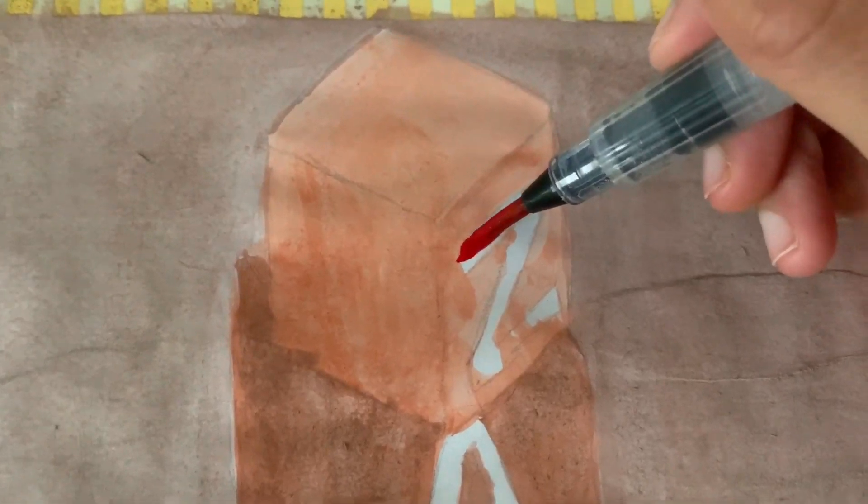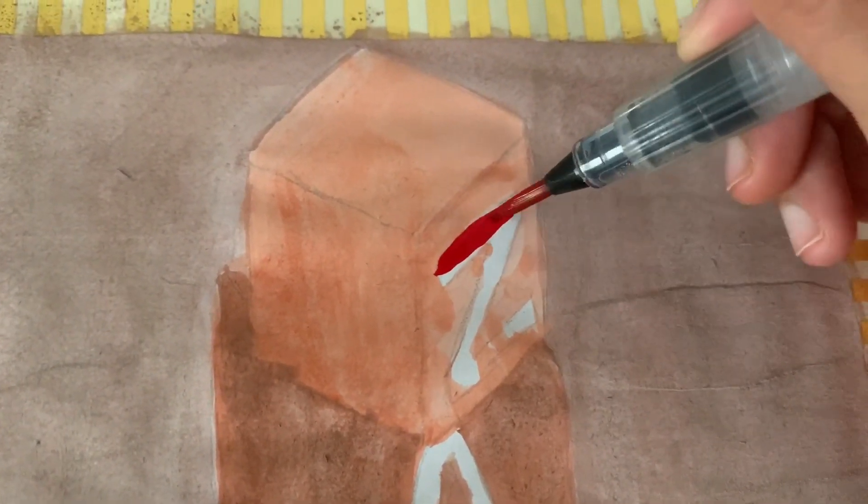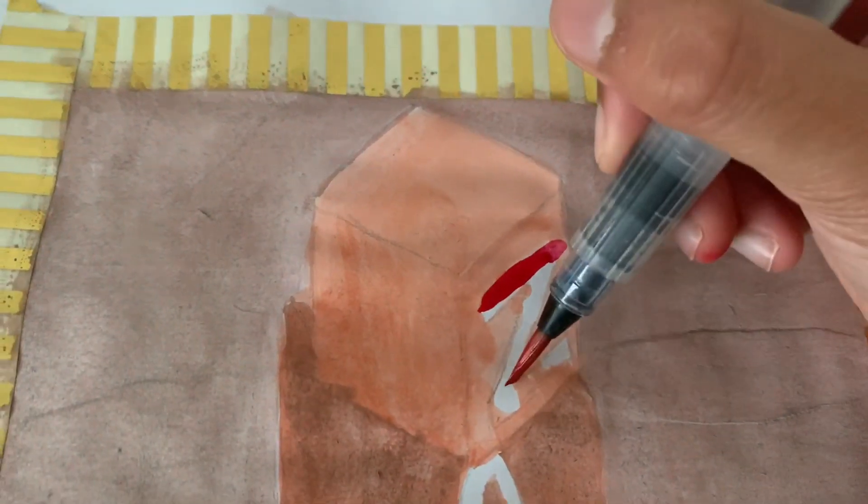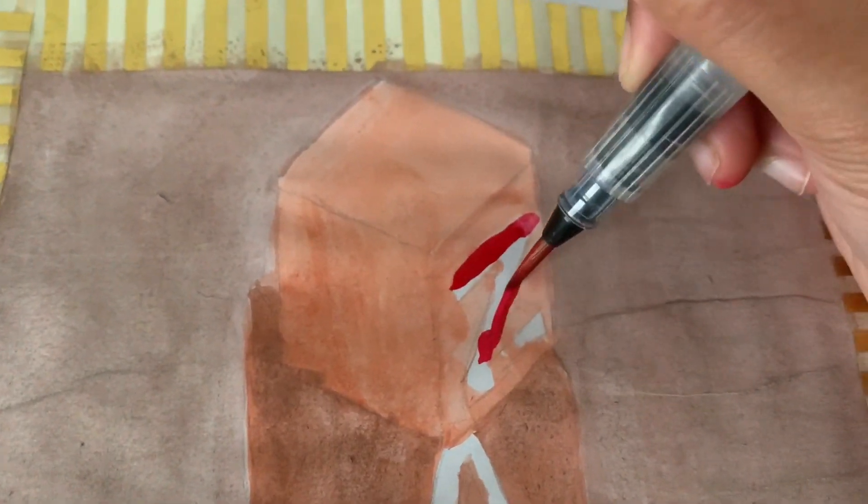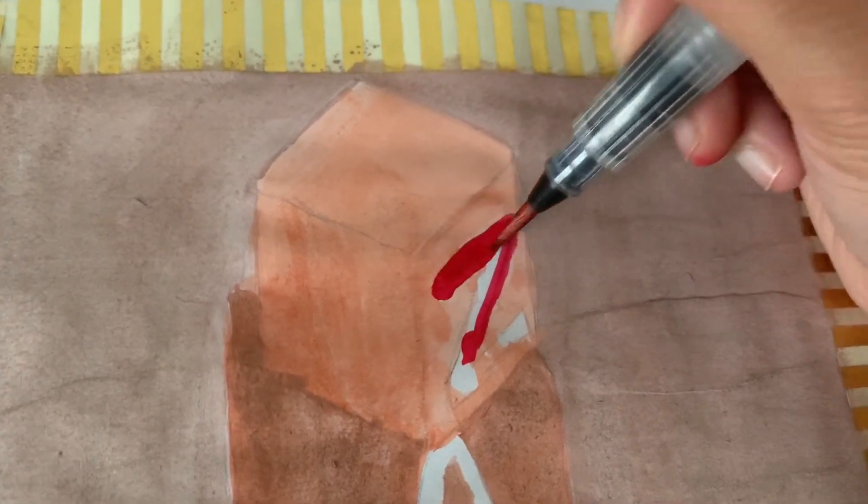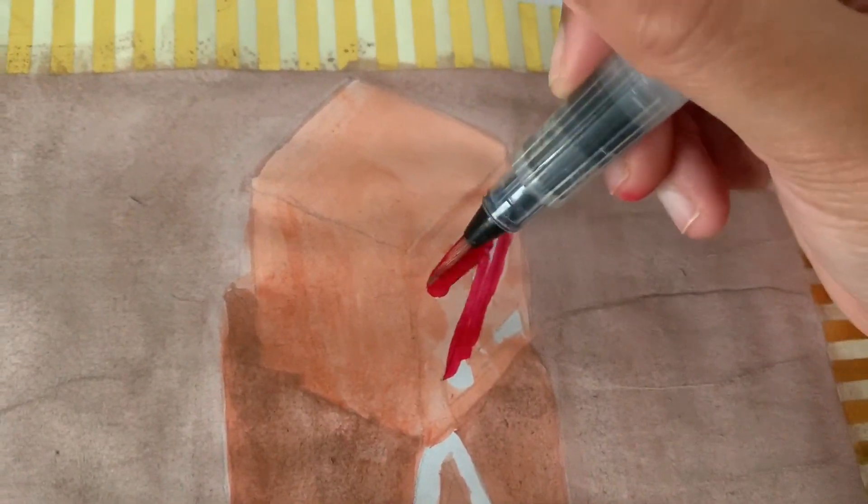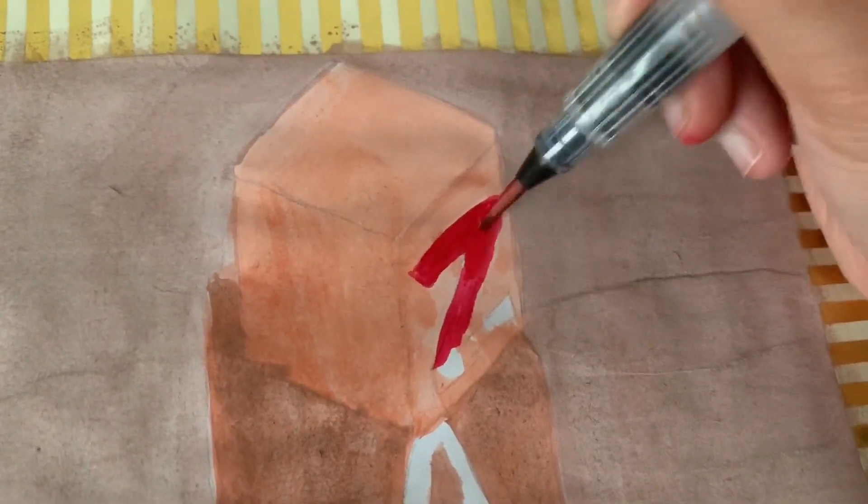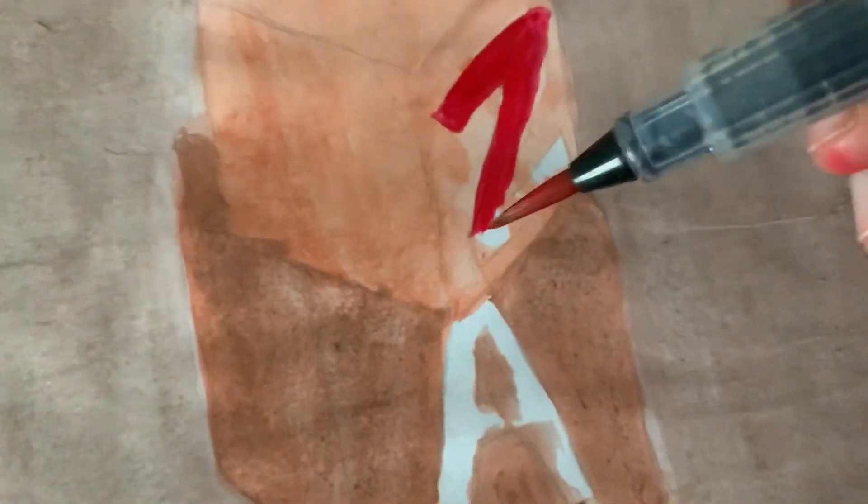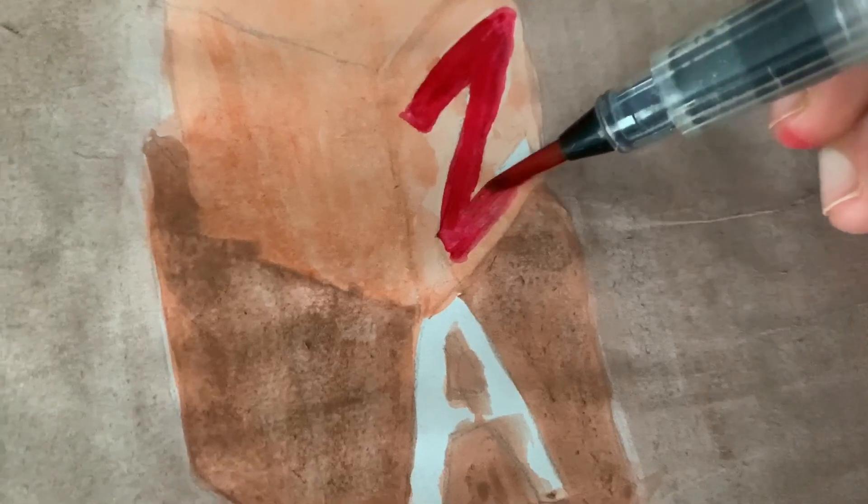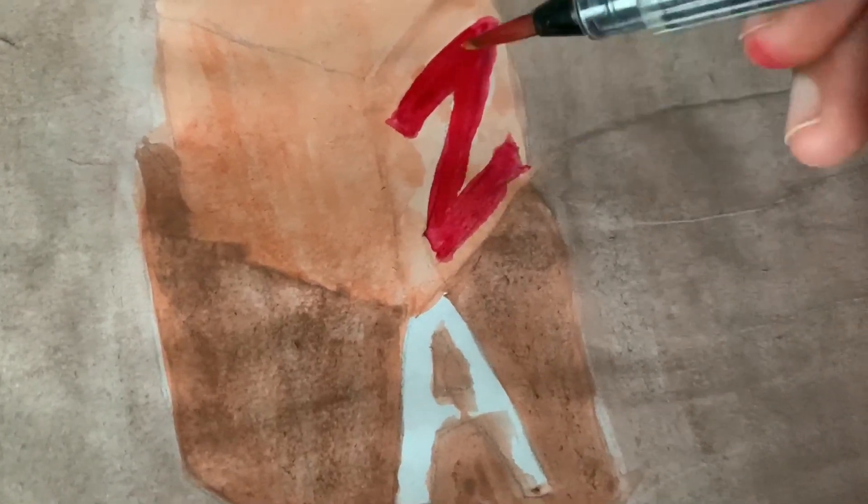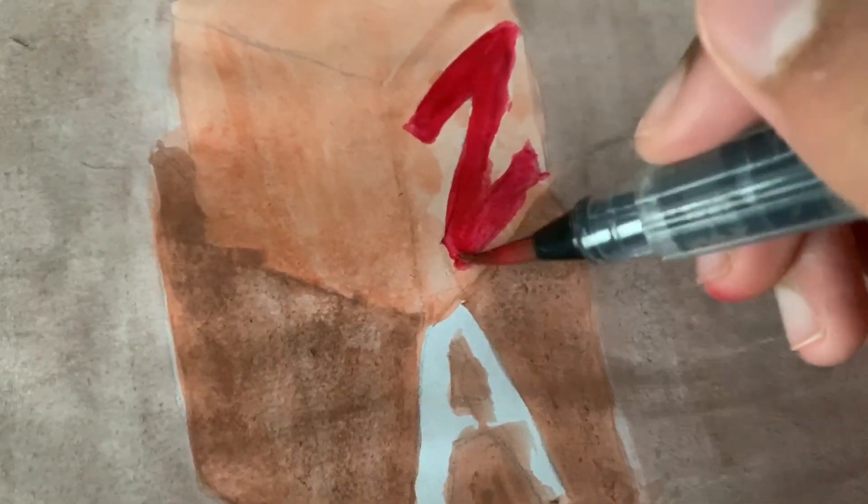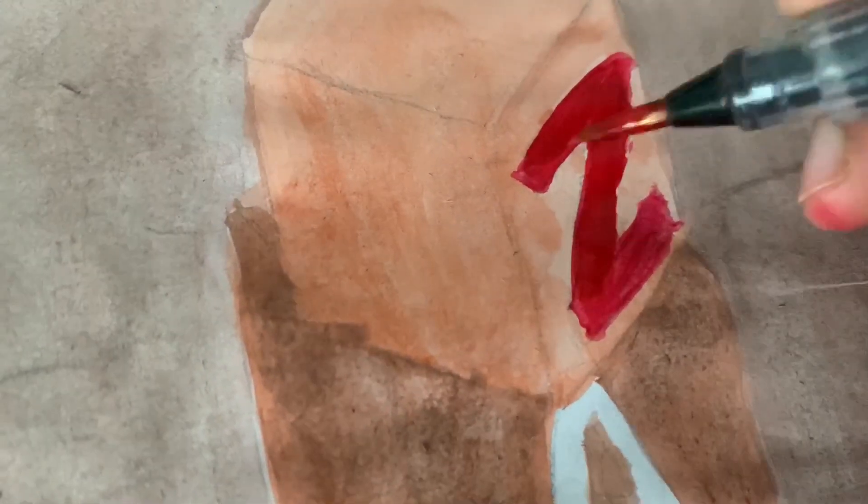And now I'll just paint in the Z. Want to stay in the line and just try to get a nice flat color in there.